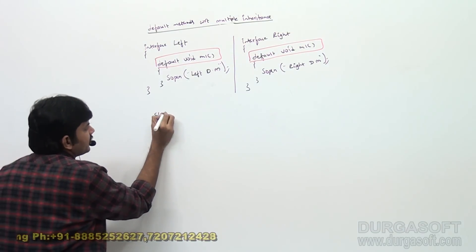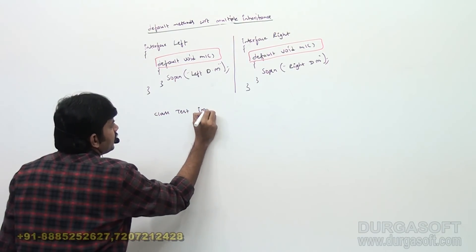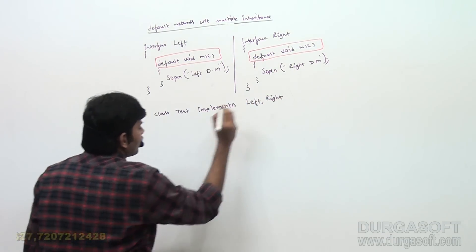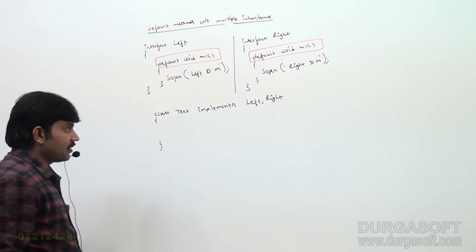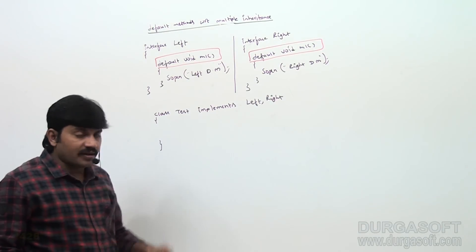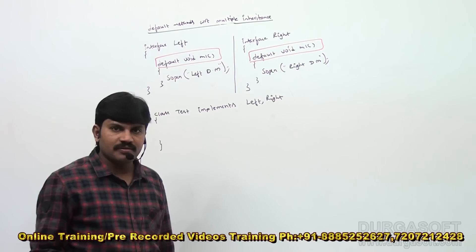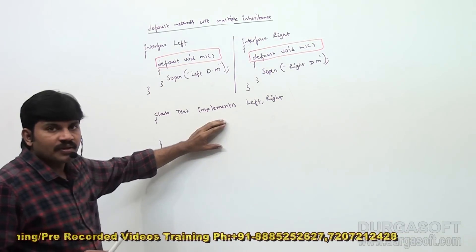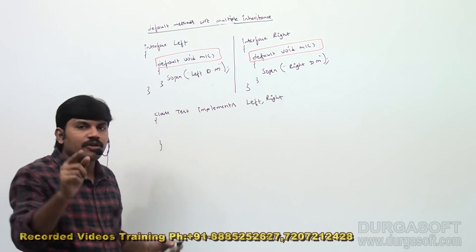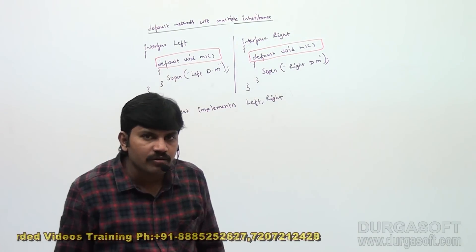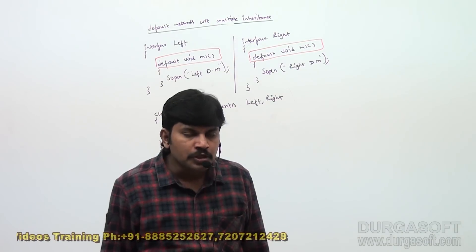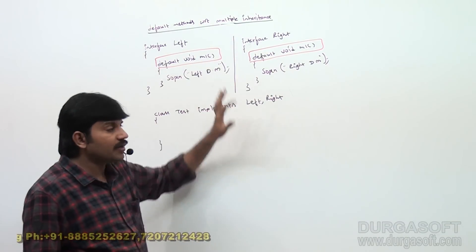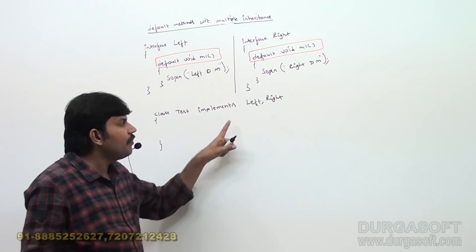Now I am writing `class Test implements Left, Right`. Whenever I implement both Left and Right, immediately the compiler will give an error. The reason is that m1 is coming from Left and m1 is also coming from Right. Within this class, if I use m1, which m1 should execute? That's an ambiguity problem. The compiler tells us: unrelated defaults for m1 came from the parent interfaces — resolve this problem first.